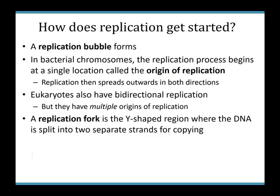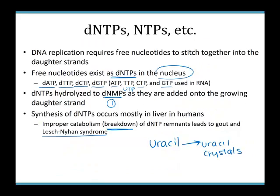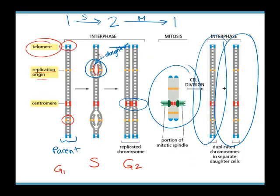How do we start the process of replication? First, a replication bubble forms at a specific area of DNA called the origin of replication. As soon as that replication bubble opens, we lay down daughter strand, and the bubble moves outwards in either direction until it reaches the end of the DNA molecule. This is called bi-directional replication — bi meaning two.